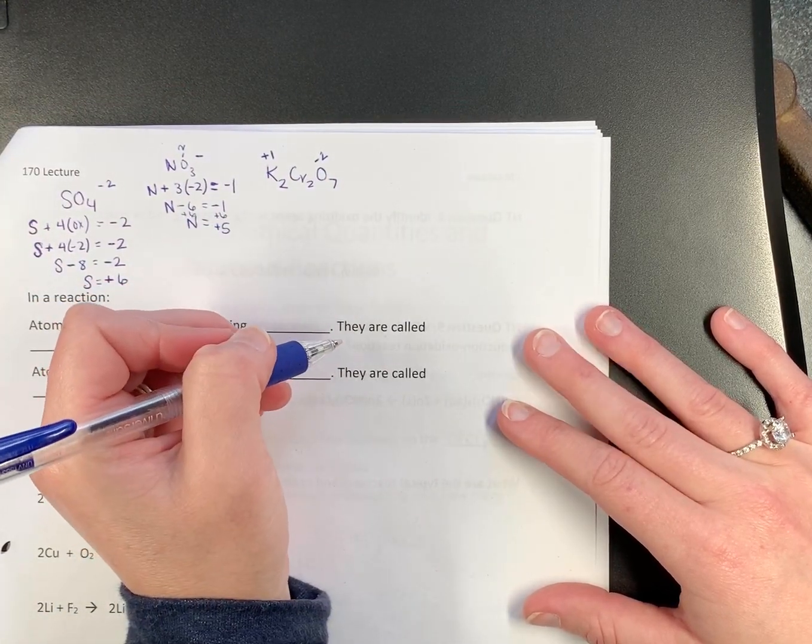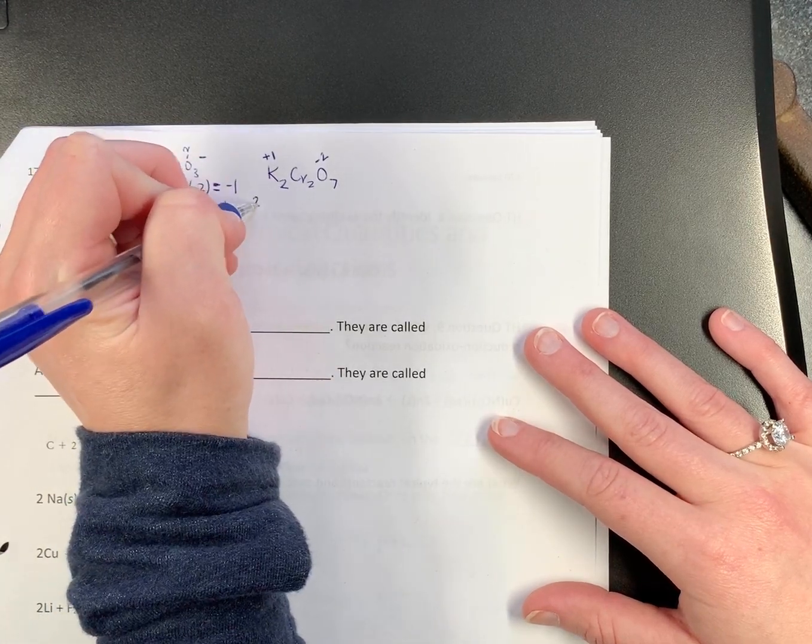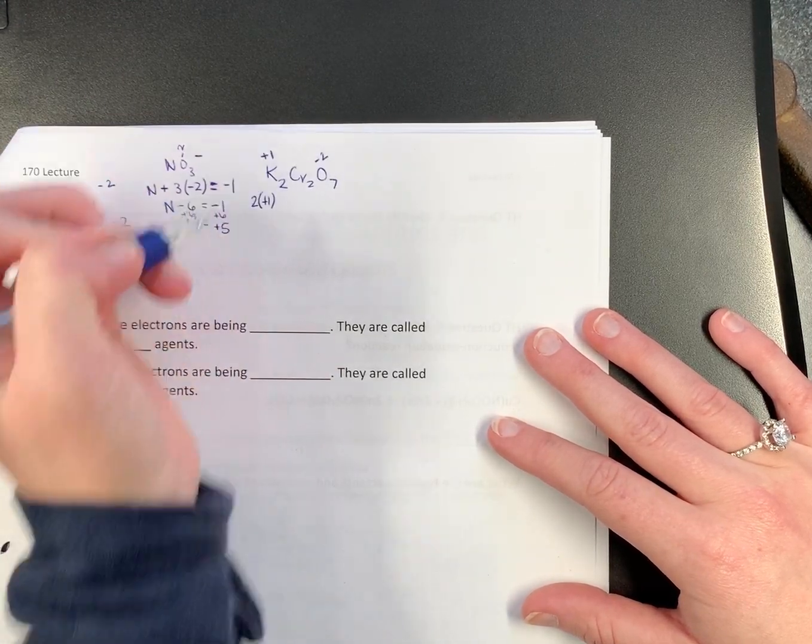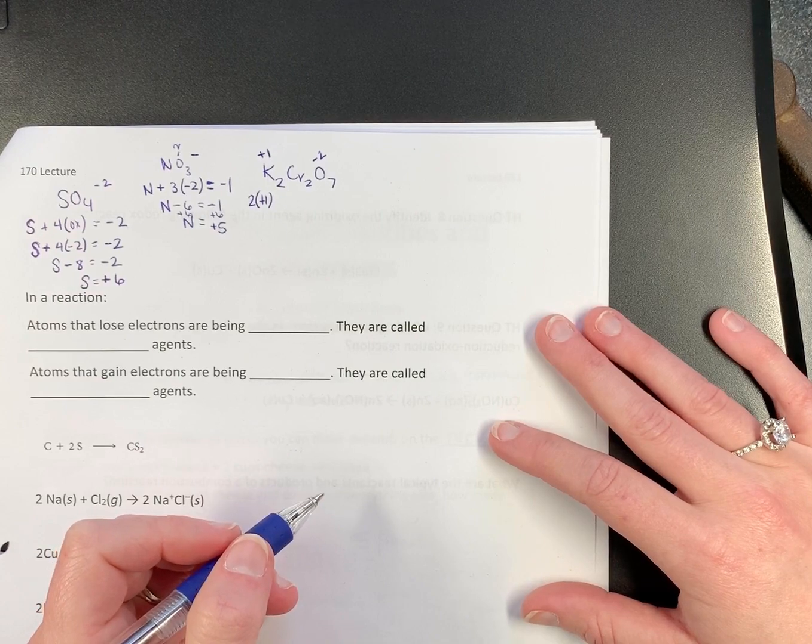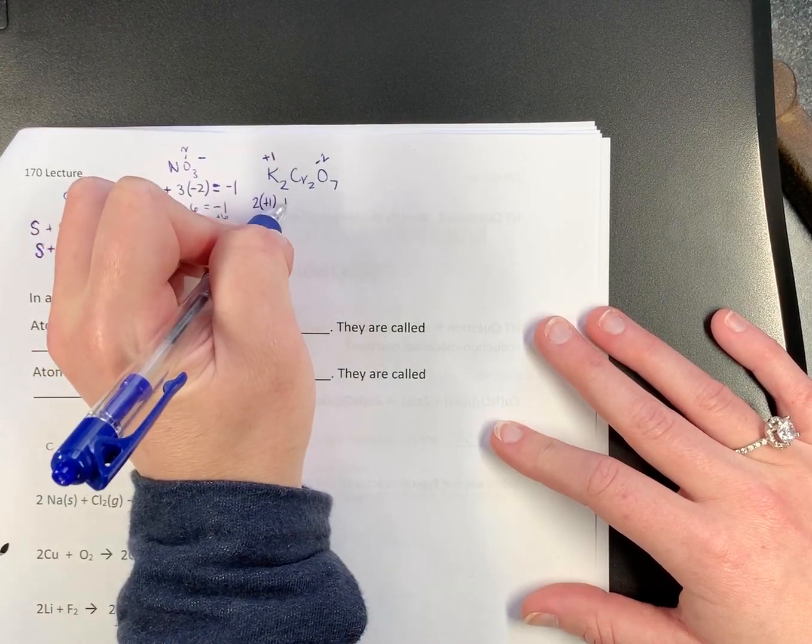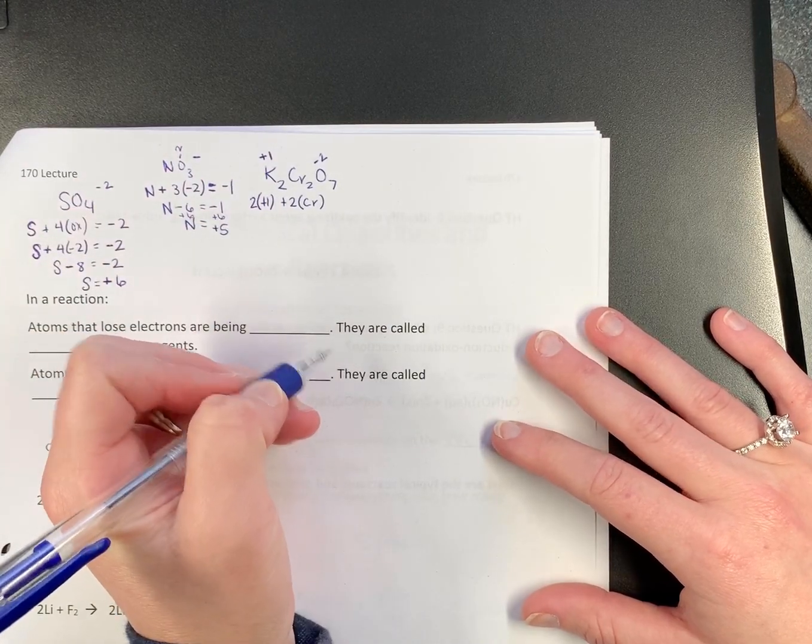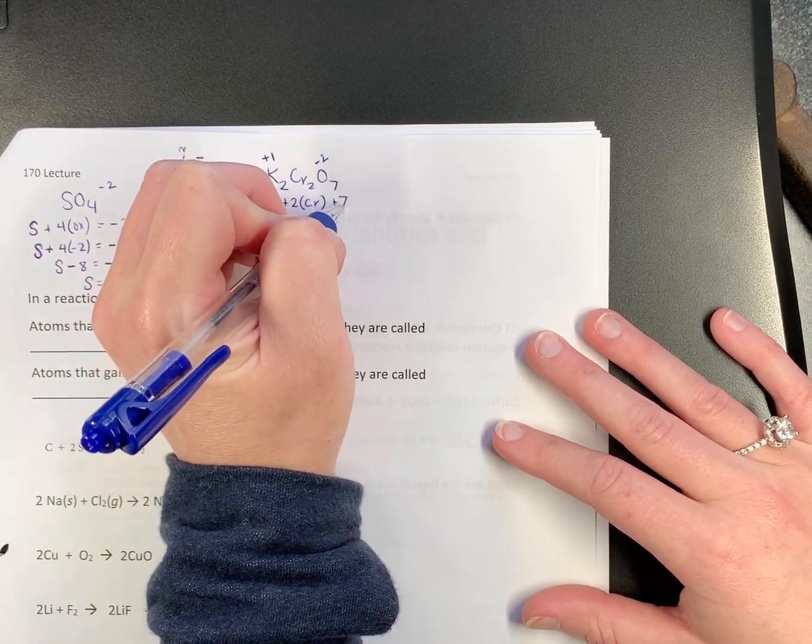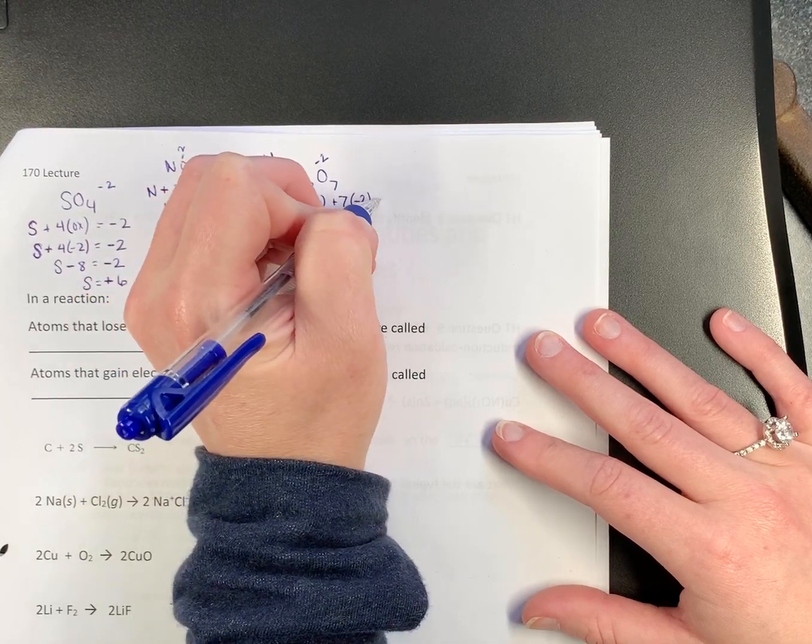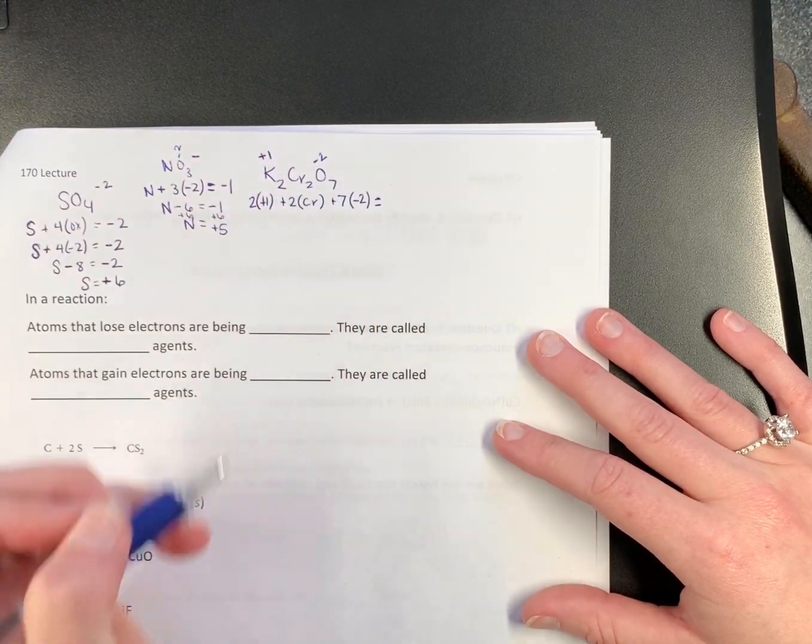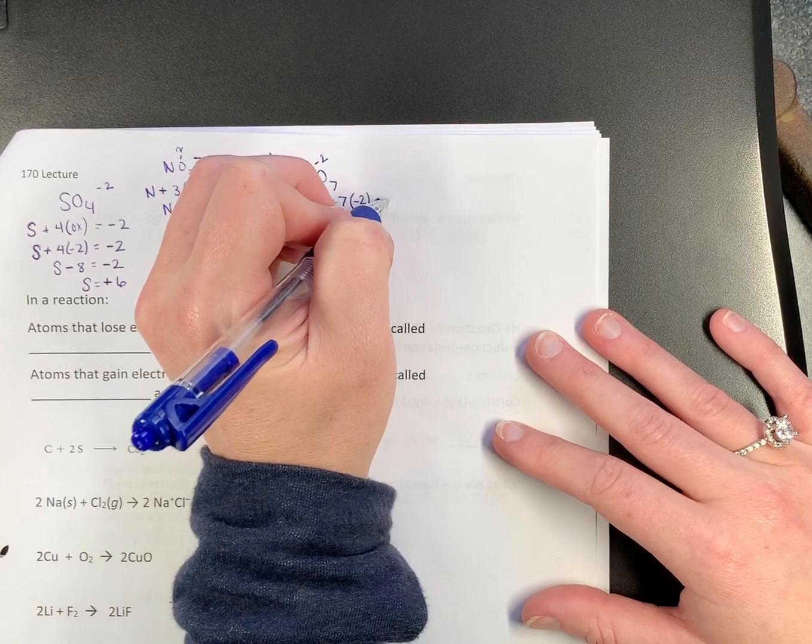So we've got to figure out what chromium is. So we can set up our expression. We have 2 potassiums. So 2 times plus 1. And we know that 2 times whatever chromium is, plus 7 oxygens times negative 2, all adds up to how much? Zero.